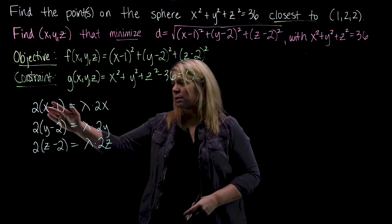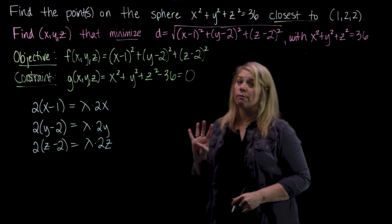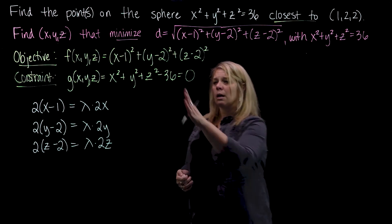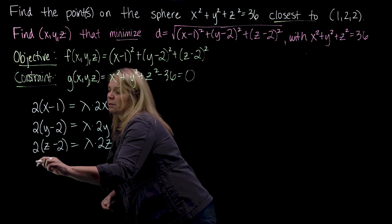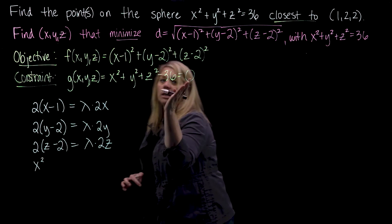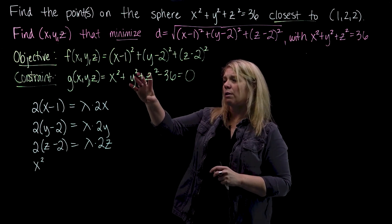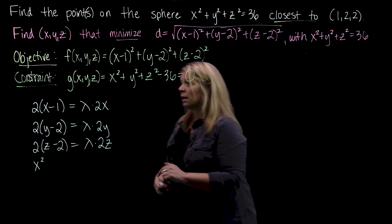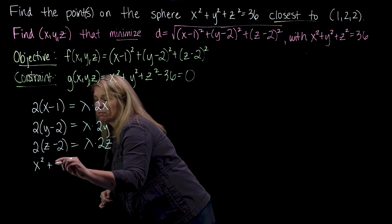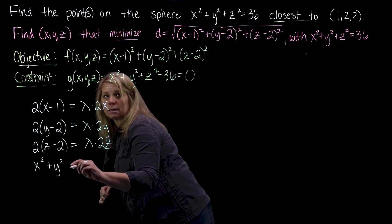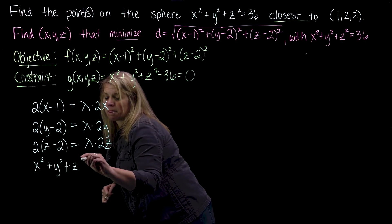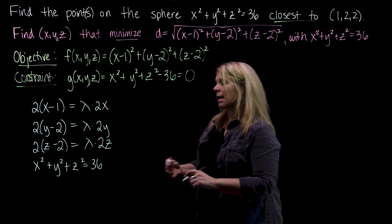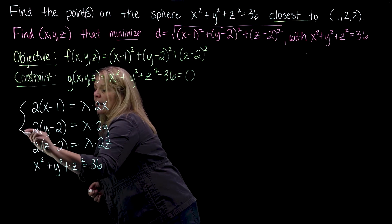These are the equations from the components of gradient f = lambda times gradient g. I have three equations and four unknowns, so I need a fourth equation. The constraint equal to 0 is the fourth equation. I'm going to add 36 back to both sides. The reason you need the constraint equal to 0 is so you can think about this as a level surface of a function of three variables — that's how the theorem is stated.